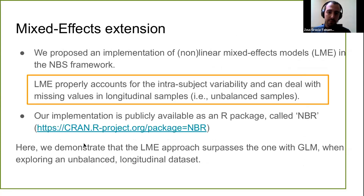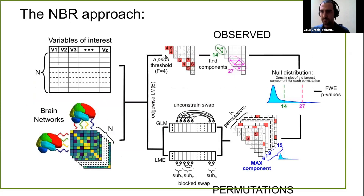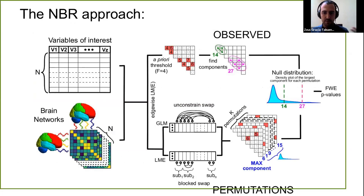We uploaded it to the R packages in the CRAN. And we are going to apply it — make an example with real data. This is the diagram of how the MBR works. The input is we put all the brain networks together — we concatenate them — here at the sample level. And we want to test the relationship of any of the possible connections with explanatory variables.